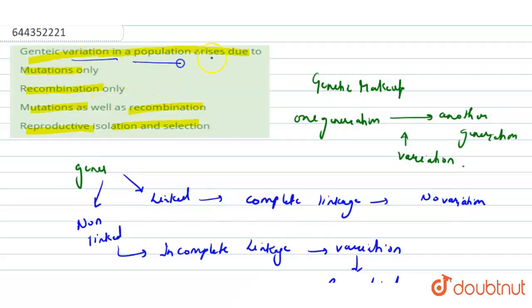Now the question says that genetic variation in a population arises due to - so this genetic variation in a population arises due to difference, that is the variation, and this variation can be mutation.